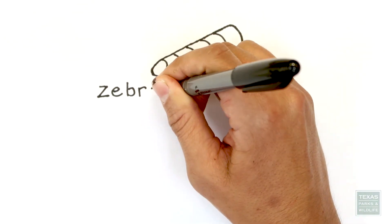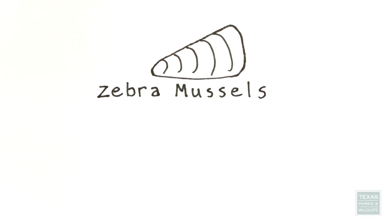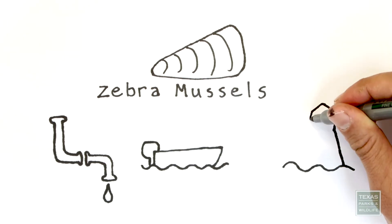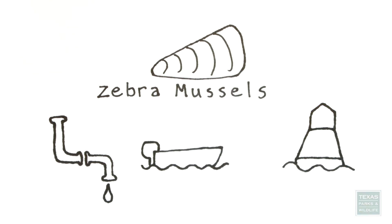originally native to the seas of Eastern Europe and the Middle East, have taken over some Texas waterways, and have damaged water pipes, boats and their engines, buoys, and even air conditioners in addition to destroying habitat.